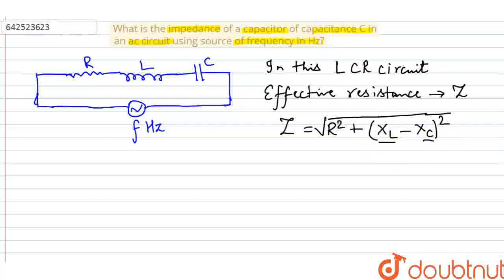Now in the question, it is given that you have to find the impedance of a capacitor of capacitance C in an AC circuit. In the question, there is no role of R and L, so the value of R and L is 0. I can rewrite the formula for the impedance. What I am getting here is XC, that is the capacitive reactance.